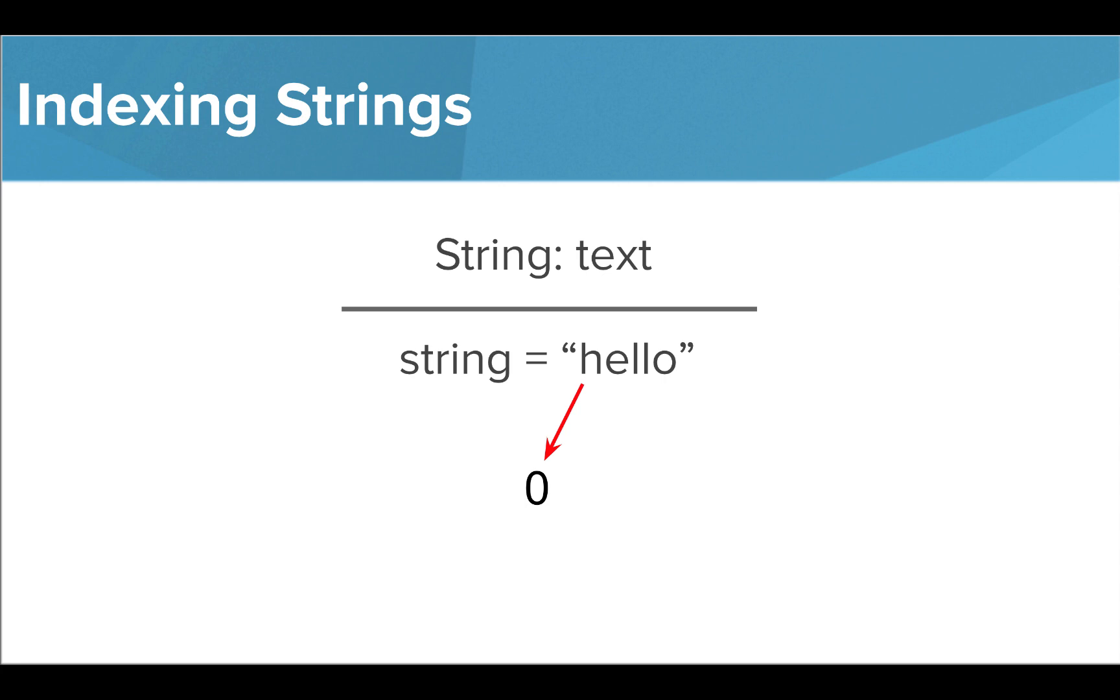In this case, the letter H is at index zero, the letter E is at index one, and so on until we reach the last letter O, which is at index four. The important thing to note here is that our index values do not start at one. They always start at zero.